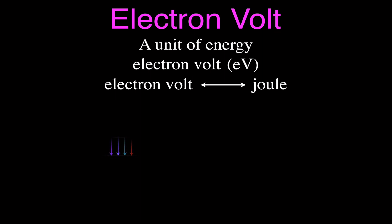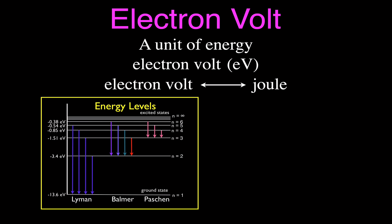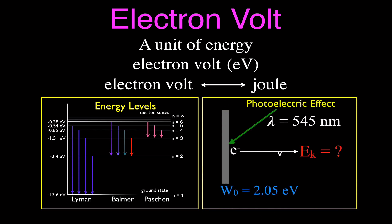There are some places where we use electron volts more commonly. For example, in atomic energy level diagrams — this is the energy level diagram for the hydrogen atom, and you can see the energy levels are given in electron volts: minus 13.6 electron volts, minus 3.4 electron volts. Also in the photoelectric effect, the work function for the metal is given in electron volts, for example 2.05 electron volts.